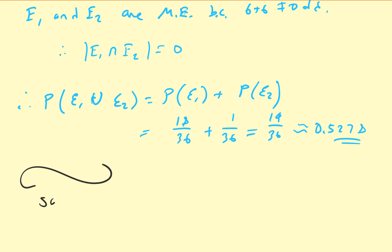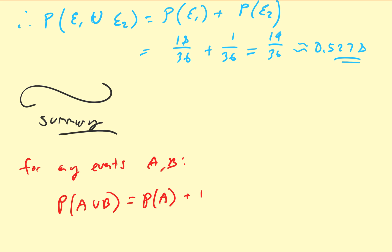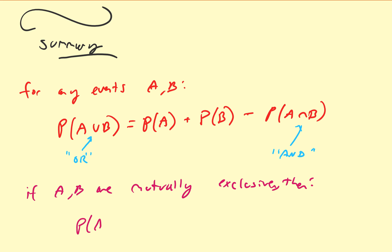So overall, let us summarize what we have. We have two properties discussed in this video. For any events A and B: the probability of A union B equals the probability of A plus the probability of B minus the probability of A intersection B. Note that union corresponds to OR and intersection corresponds to AND. And if A and B are mutually exclusive, then the probability of A union B equals the probability of A plus the probability of B. These are what some people call the sum rules for probabilities.